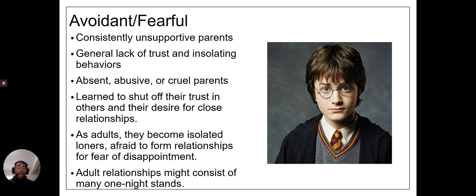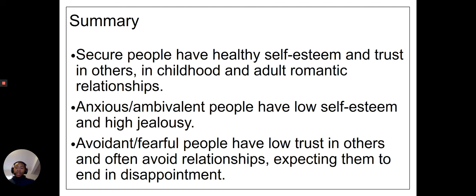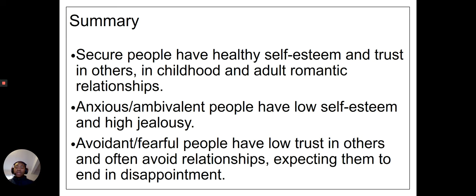Harry often pushes people away. He doesn't believe relationships bring comfort and prefers to do things alone. He avoids admitting that he likes anyone, and when it's obvious, he does nothing — if you think of both of his major love interests, he sits back and waits for them to make the first move. In summary: secure people have healthy self-esteem and trust in others in both childhood and adult romantic relationships; anxious-ambivalent people have low self-esteem and high jealousy; and avoidant-fearful people have low trust in others and often avoid relationships, expecting them to end in disappointment.